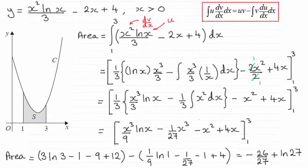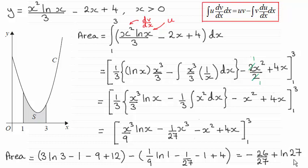For this part of the question we were asked to find the exact value for the area S under this curve C, and give the answer in the form a over b plus the natural log of c, where a, b and c were integers. The answer turns out to be exactly minus 26/27 plus the natural log of 27.